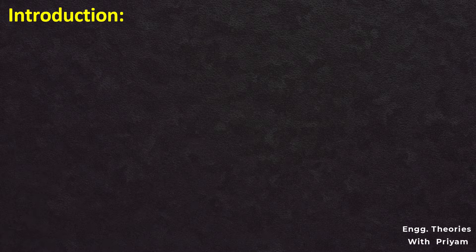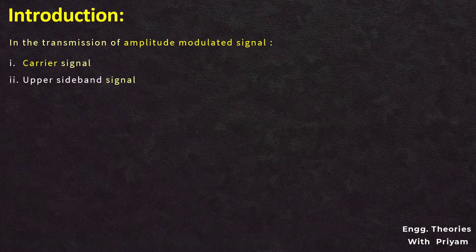In this lecture we will understand what is double sideband suppressed carrier modulation or DSBSC modulation, and the different characteristics of the DSBSC modulated signal. In the transmission of the amplitude modulated signal, we had a carrier signal, an upper sideband, and a lower sideband signal.